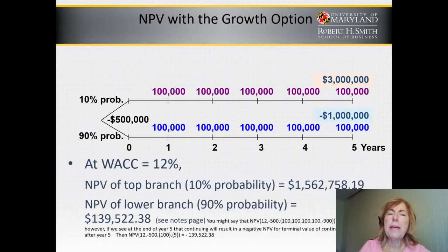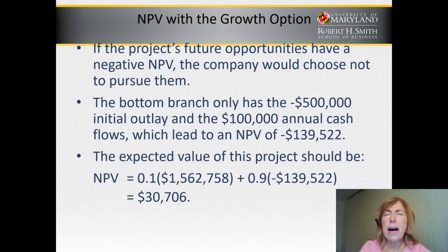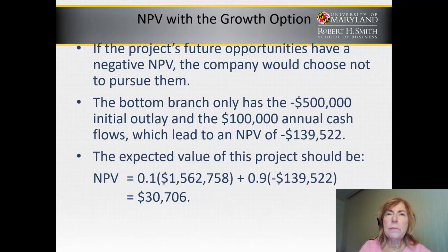When computing the NPV, we find that the NPV of the top branch is $1,562,000, but the NPV of the bottom branch is negative $139,000, and that's a 90% probability. If the project's future cash flow opportunities have a negative NPV, then the company would choose not to pursue them. But they won't know until year five whether it'll be positive or negative. The bottom branch would only have the negative $500,000 initial outlay and the $100,000 annual cash inflows, which leads to an NPV of negative $139,000.